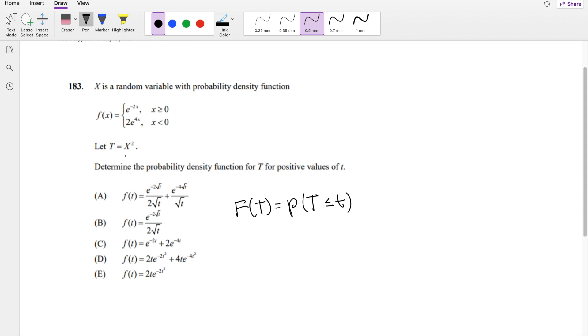And because we know t by definition is this here, we can just plug that in. The probability that x squared is less than or equal to t. So then this will also equal, I can take the square root of x, so x becomes less than or equal to plus or minus square root of t.